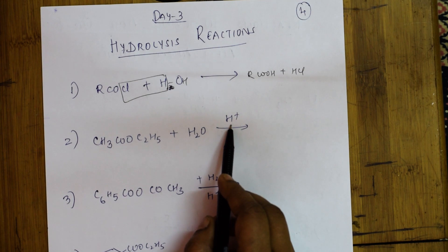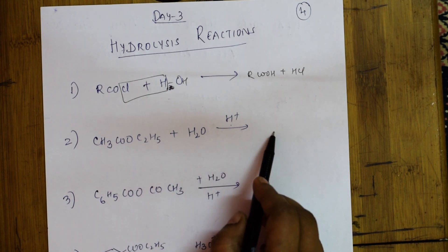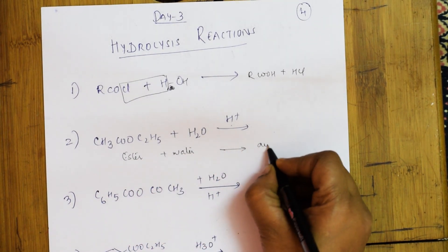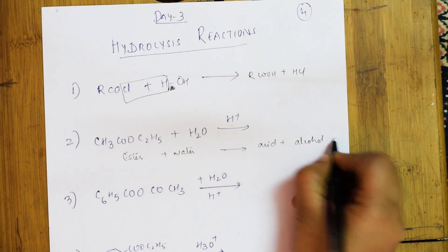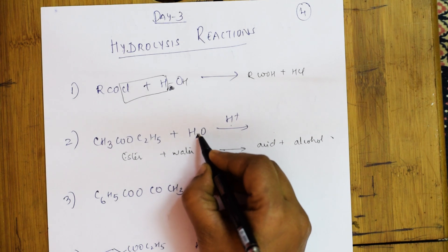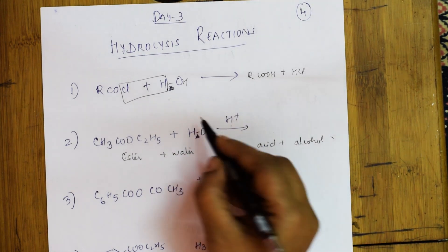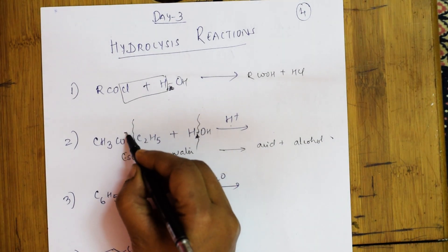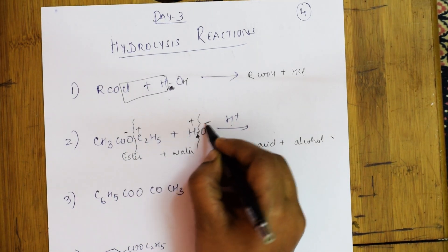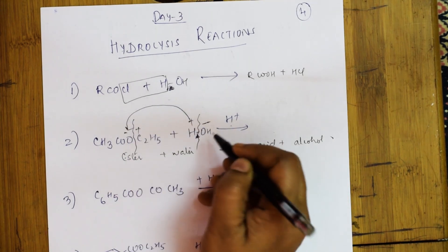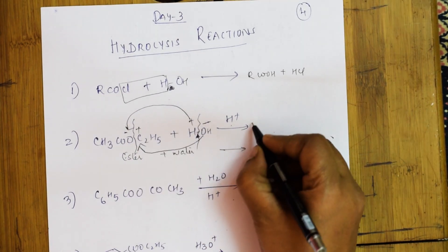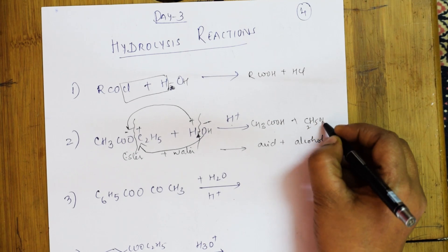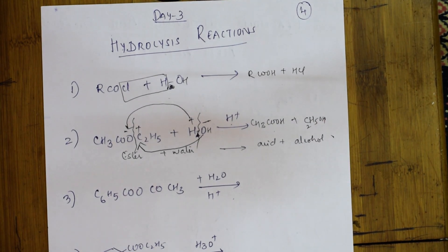Ester plus water gives me acid plus alcohol — that is what we have learnt in grade 10 also. This water molecule, try to write it as H and OH. Where should you break the bond? Try to cleave the bond here and after the ester linkage. This becomes minus, this becomes plus; this becomes plus, this becomes minus. What do I get? I get CH₃COOH — the acid — plus C₂H₅OH — the alcohol. Simple! You just have to see where to cleave.